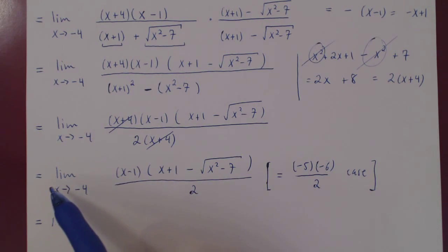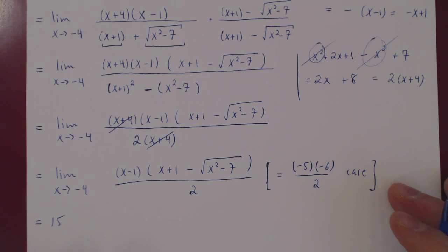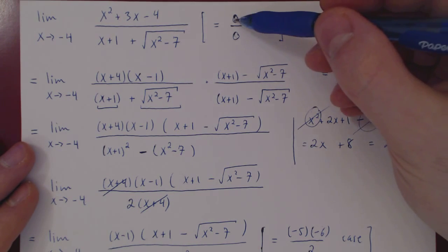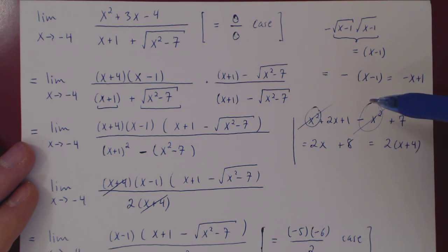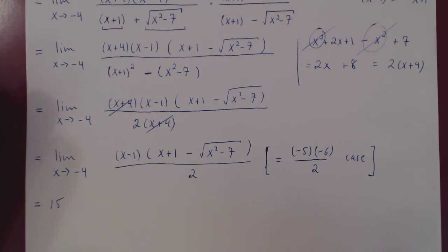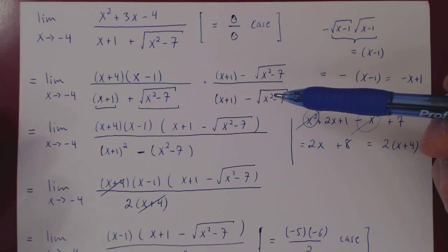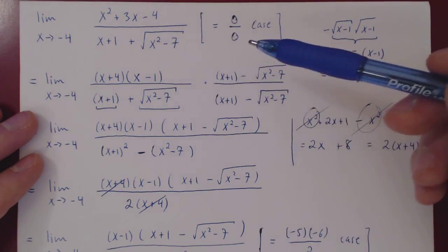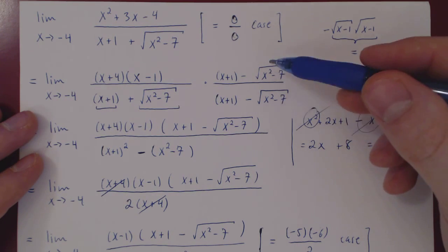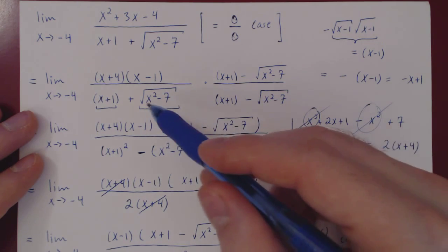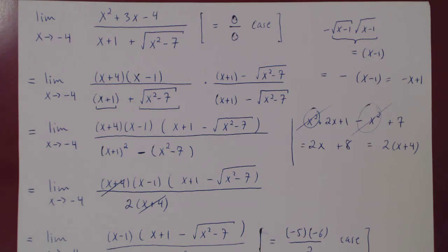This is our final answer. As x approaches negative 4, our fraction approaches positive 15. Other than the use of conjugation, there was nothing new. A 0 over 0 case in the first example gave us negative 1 over 24, and in this case, again a 0 over 0 case gave us positive 15. So always be careful that 0 over 0 can yield just about anything. To summarize: when you deal with a limit involving a difference or a sum with a square root that gives you a 0 term, multiply top and bottom by the conjugate — the exact same term but only changing the sign in the middle. That's the so-called method of conjugation.